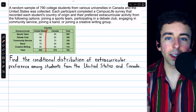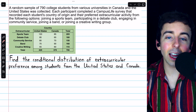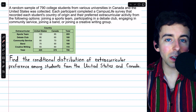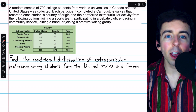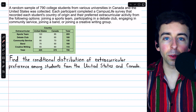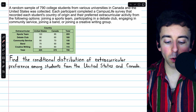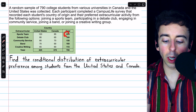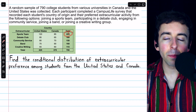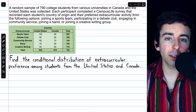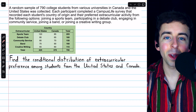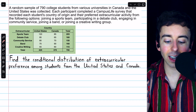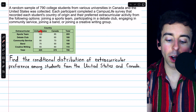This single column representing the United States students' choices can be viewed as a conditional distribution. For example, the number of students who said they prefer to join a sports team is 205. But the number of students who said they prefer to join a sports team given that the student is from the United States is 120.